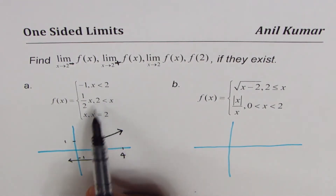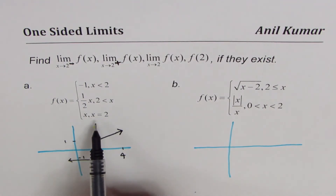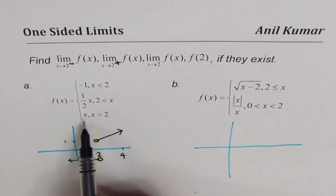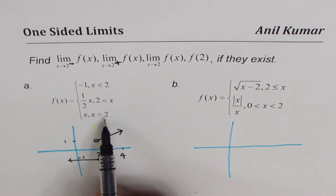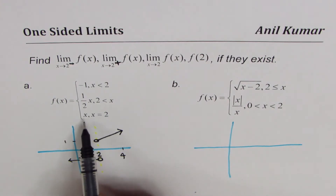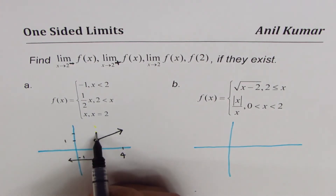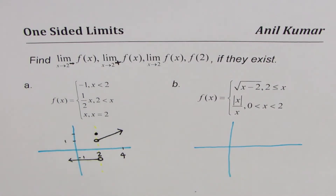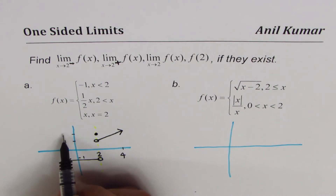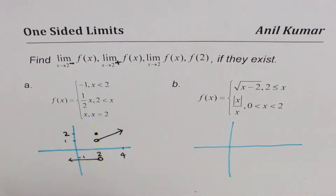The third piece: when x equals 2, the function equals x, which really means that at x = 2 the value is 2. So we place a filled-in circle at the point (2, 2). Now with the graph sketched, I think it's very simple to answer all the questions.